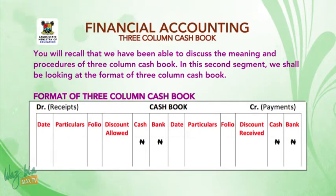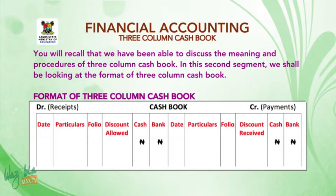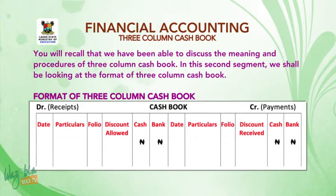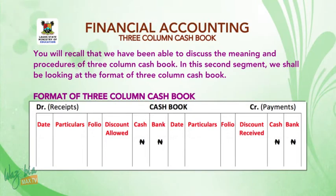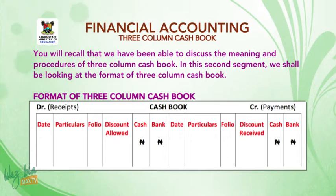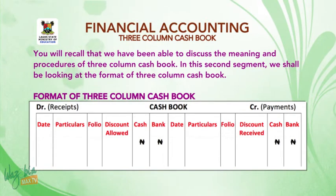Just like the format of double column cash book, where you have the T format, your left hand side is called the debit side, which is the receipt side. Your right hand side is called the credit side, which is the payment side. And you write cash book in the middle. In addition to that double column cash book format, you create another column called discount on both sides.